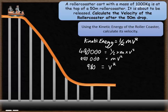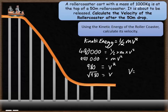Because it's equal to velocity squared I need to square root both sides. So if I square root 980, that equals the velocity of the car. The velocity of the cart when it reaches the bottom is 31.3 meters per second.